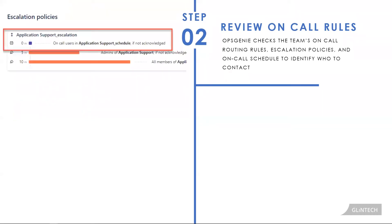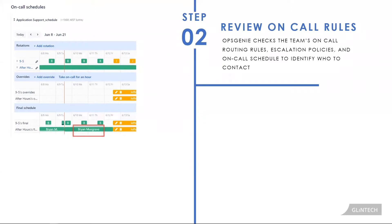That escalation path says to contact the on-call user as defined in the schedule before any other future escalations are required. It's going to look at your final schedule, see who's on call, check any overrides, and contact the person who is on call — and in this particular case, we'll say it's you.